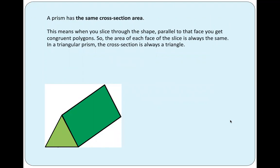Now let's have a look at this shape. It is a prism and it has two identical faces facing each other. So one is this face here — it's a triangle face — and the other one is on the back, the one you cannot see. Now why is this shape called a prism? It is called a prism because this shape has the same cross-section area.